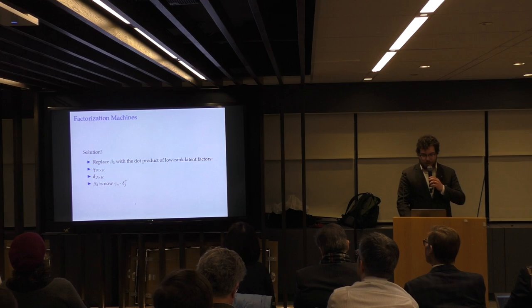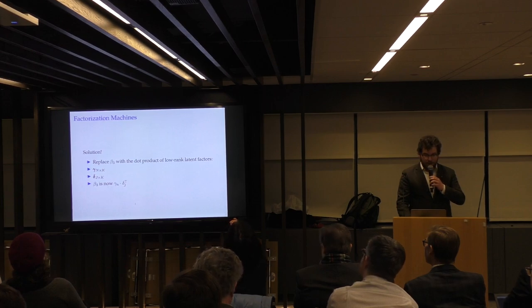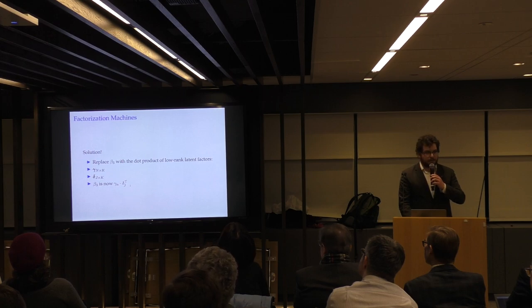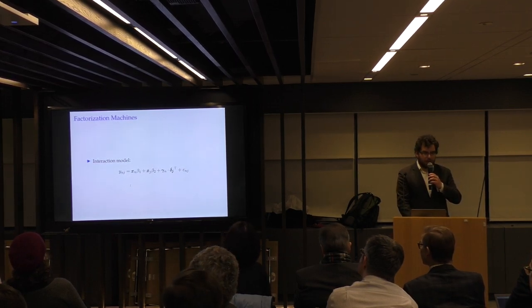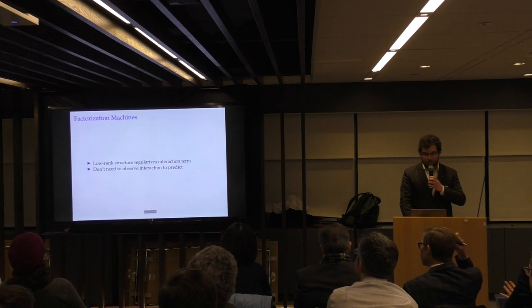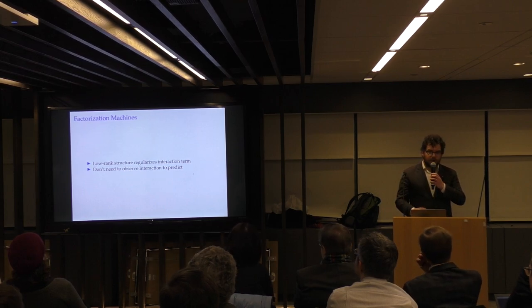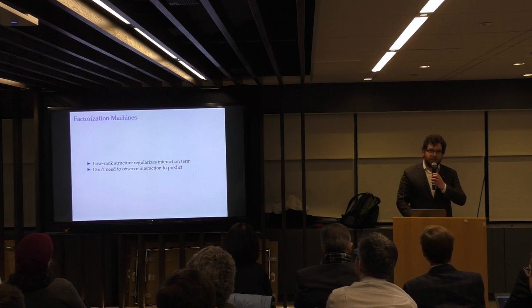So the solution is a factorization machine, where you replace beta three with the dot product of low rank latent factors. Continuing with the notation from before, if you have two groups, group one will be gamma, which is n by k, and group two will be delta, which is j by k. And then beta three before it, what is now gamma times delta transpose. And so this gives you a scalar that's then added to your coefficients in the model estimation. So this is what your regression model now looks like. So you have your outcome, your main effects, and then your interaction term here. And so the interaction is just a scalar added into this model. So the advantage of this is that the low rank structure regularizes the interaction term. That is, you have a set of parameters you're learning, and they're constrained as they grow, and you don't need to observe an interaction to predict it. You can get an interaction as long as you identify a member of each group.